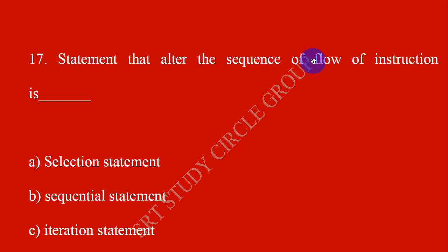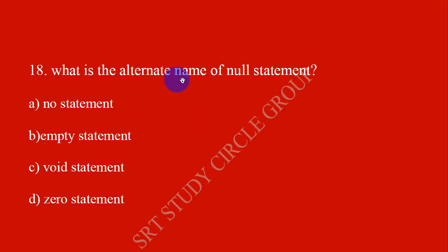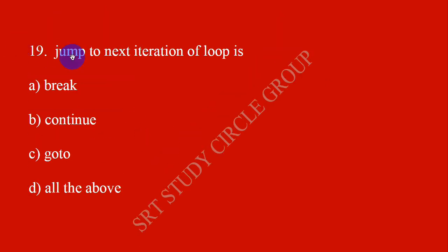A statement that alters the sequence of flow of instructions is a selection statement. The alternate name of a null statement is an empty statement. Jump to next iteration of loop — continue is used for next iteration.